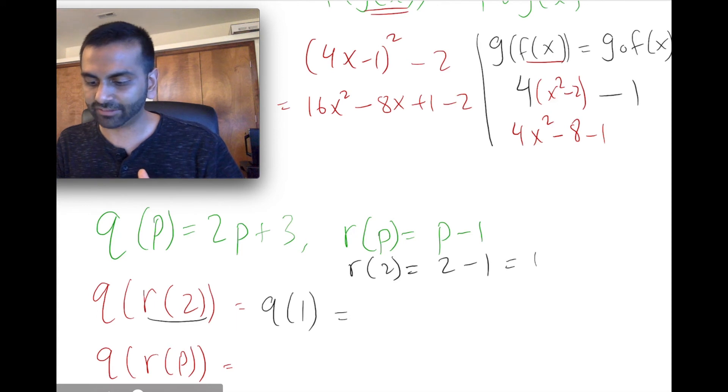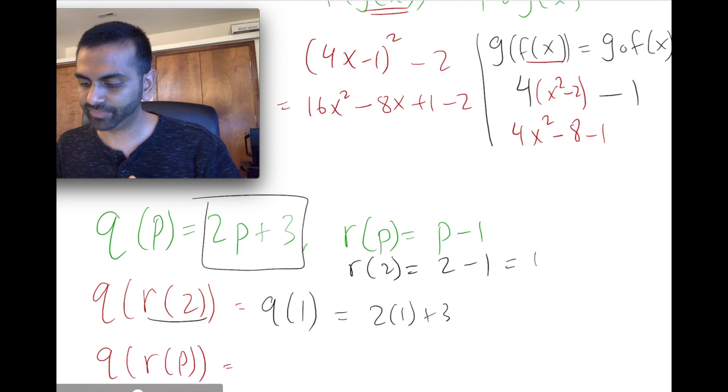And q of 1, that's pretty easy to answer. If q of p is this guy, q of 1 is just 2 times 1 plus 3, which is 5.